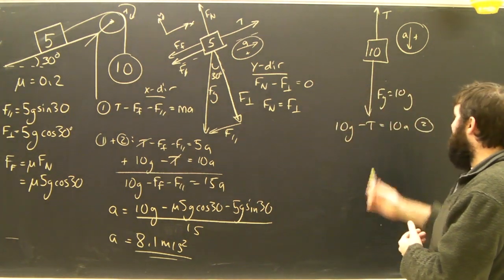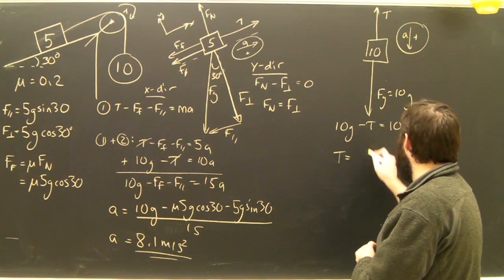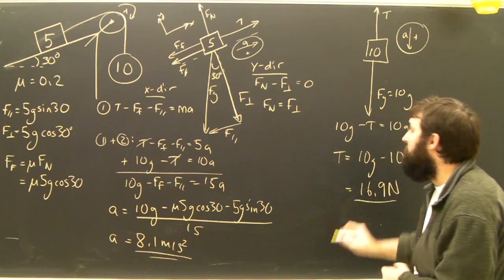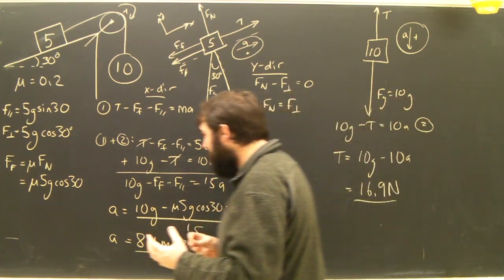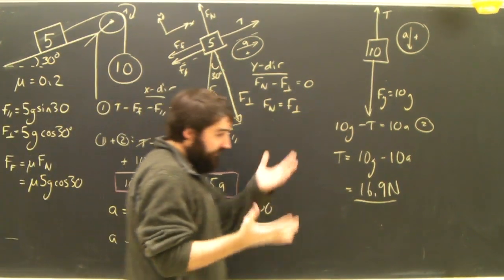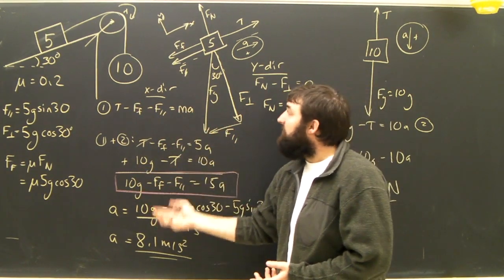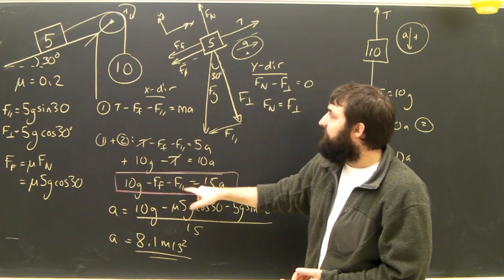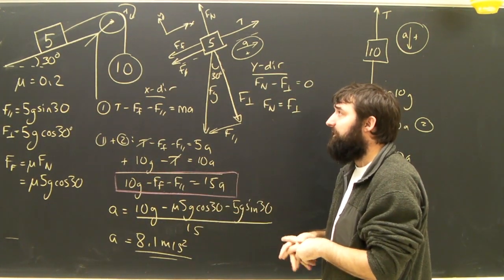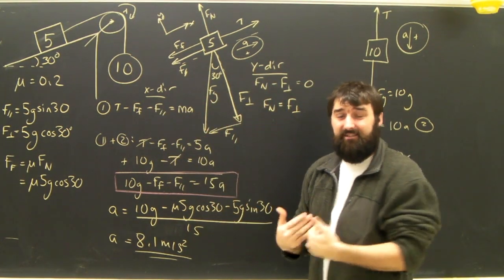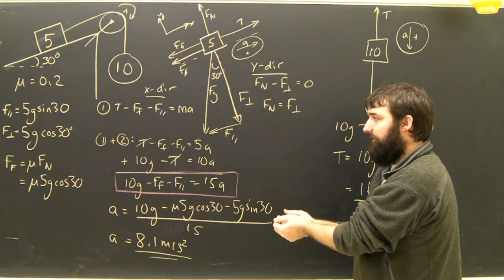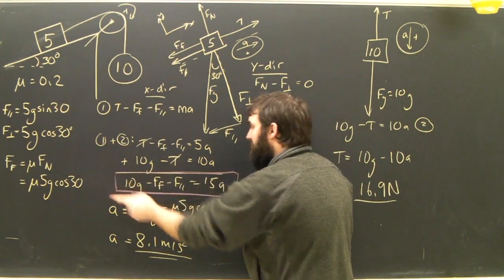The acceleration is done. We go back to equation 2 to find T: T equals 10G minus 10A. Plugging in our numbers, we get 16.9 newtons. There is a shortcut — you could skip right to the combined equation by saying what's driving the system is the force of gravity on the 10kg mass, opposed by the force of friction and the parallel component of gravity on the 5kg object down the ramp, all equaling 15A. The tensions are internal and cancel by Newton's third law. But even using the shortcut, you still need a free body diagram to find FN and FF.